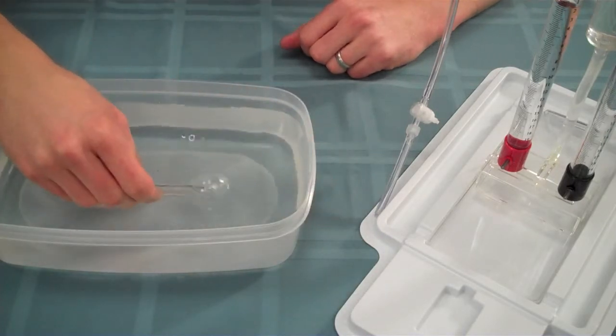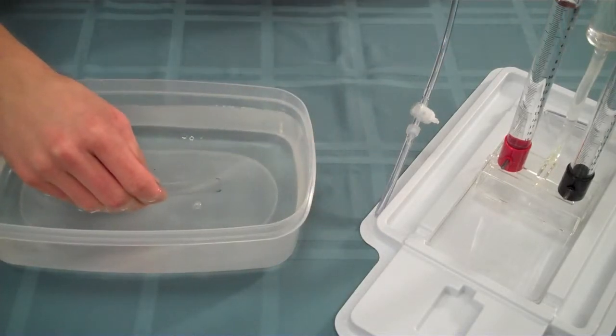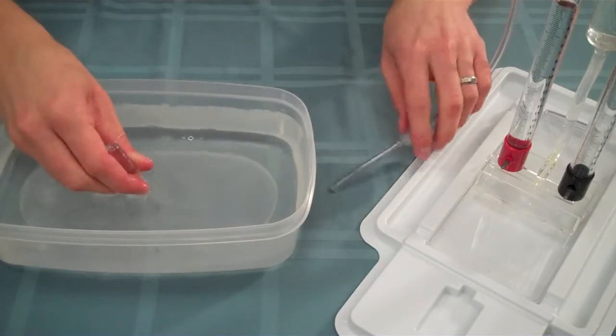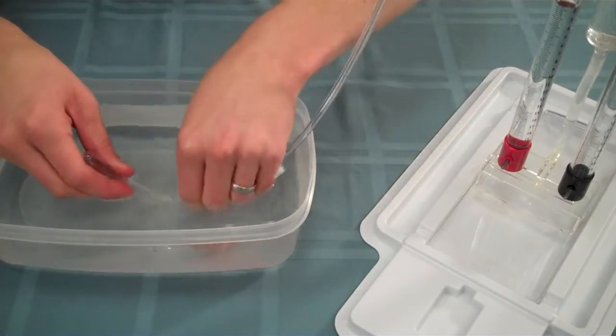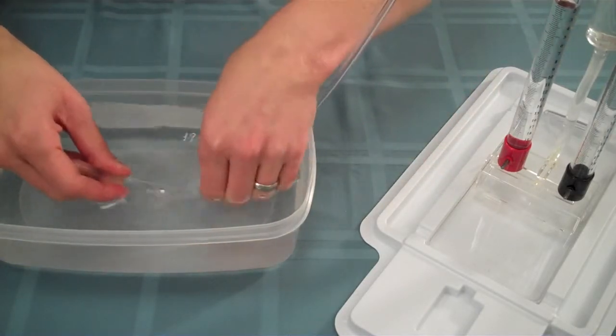First, submerge a 10-milliliter test tube in a basin of water so that the test tube is completely full of water. Then, invert the test tube. Place the end of the gas supply tube into the mouth of the test tube.